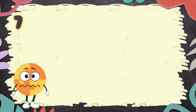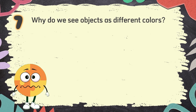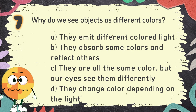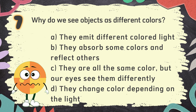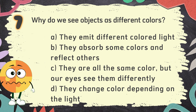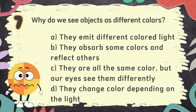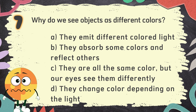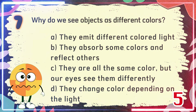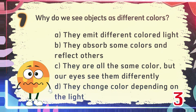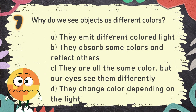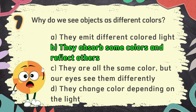Number 7. Why do we see objects as different colors? The choices are: A. They emit different colored light, B. They absorb some colors and reflect others, C. They are all the same color but our eyes see them differently, D. They change color depending on the light. The correct answer is B: They absorb some colors and reflect others.